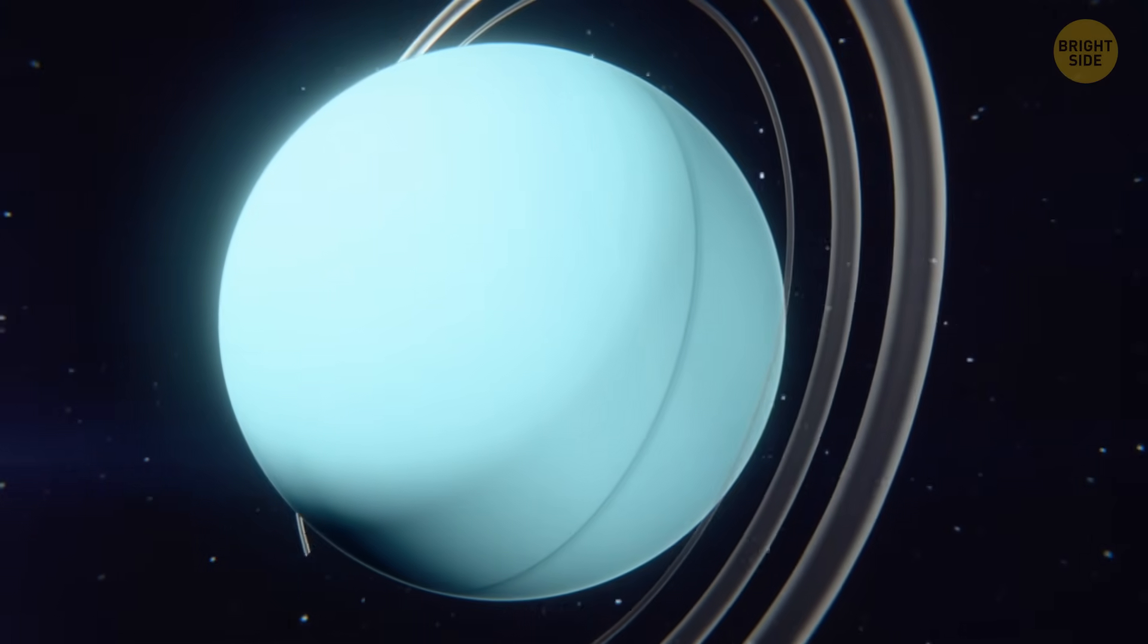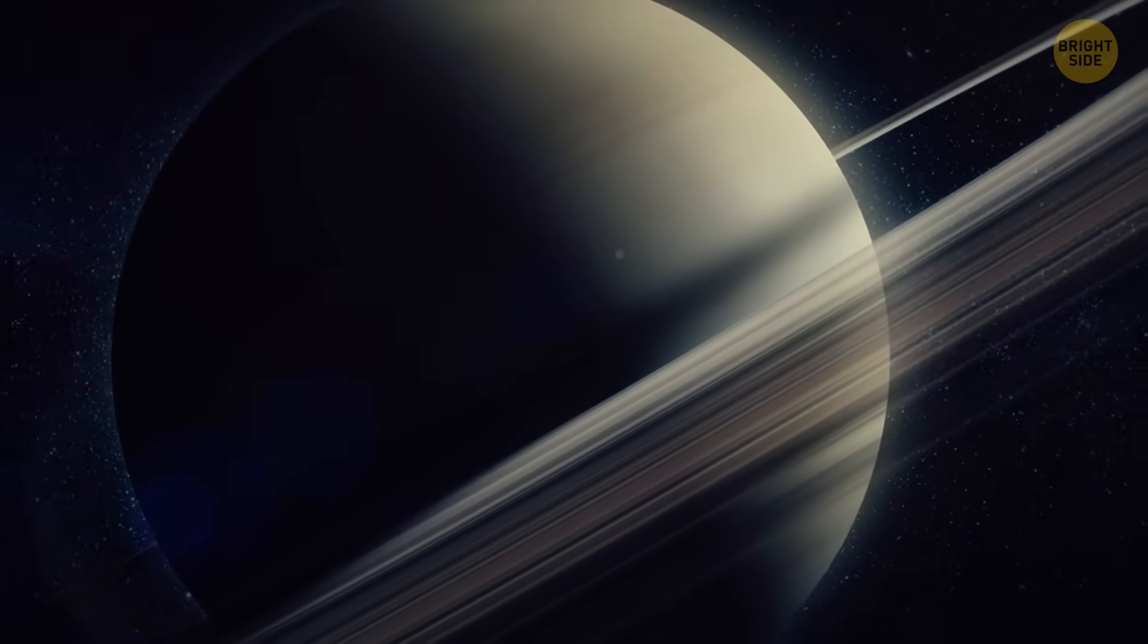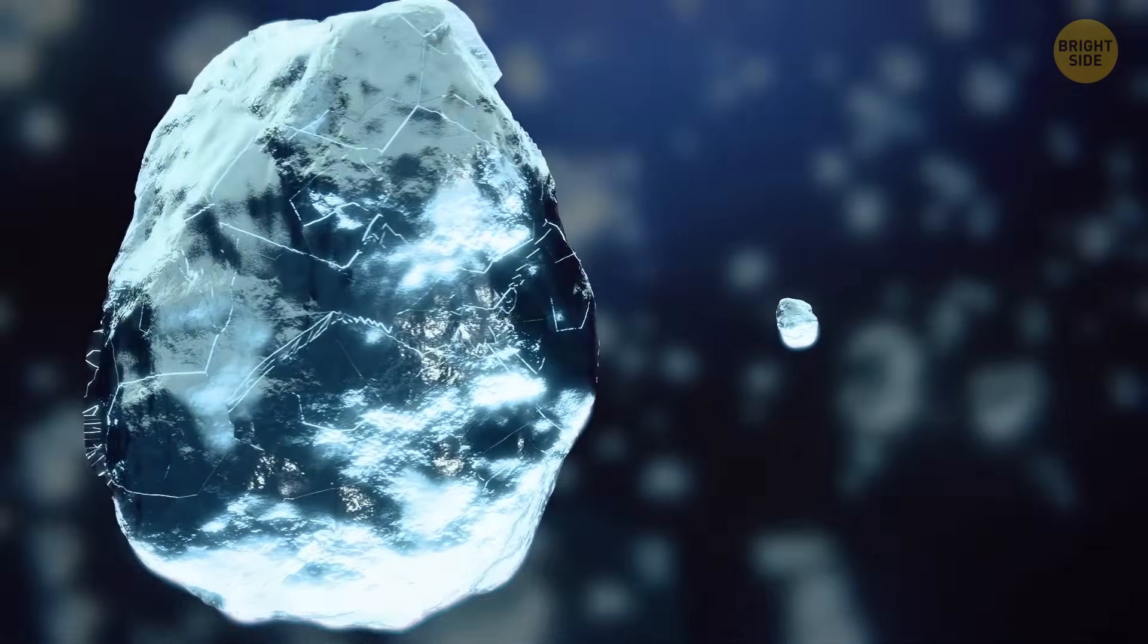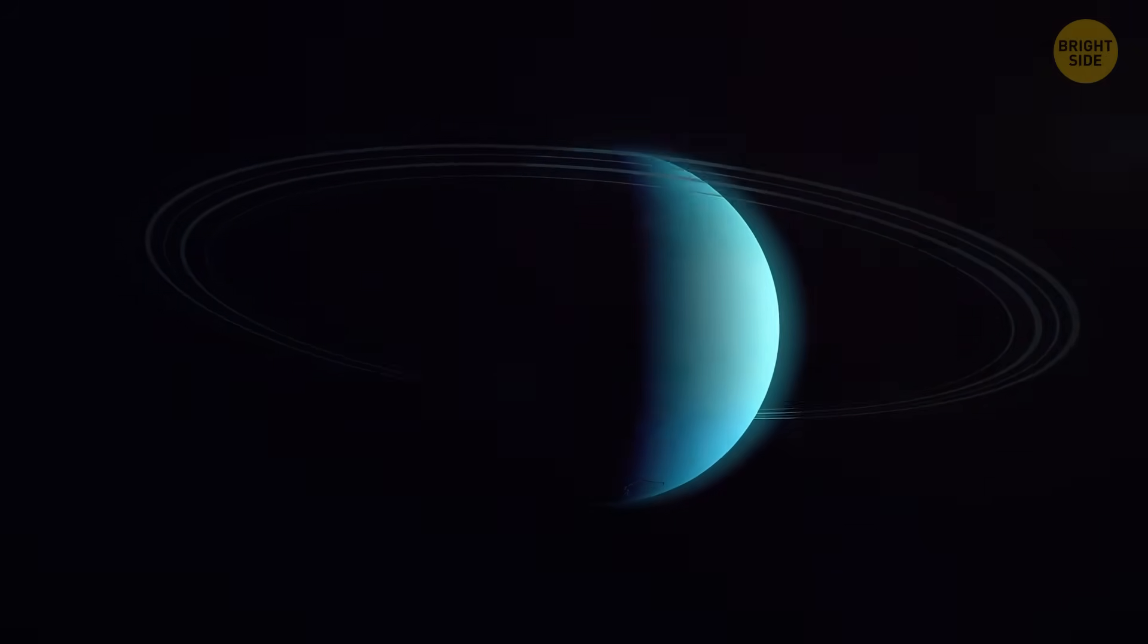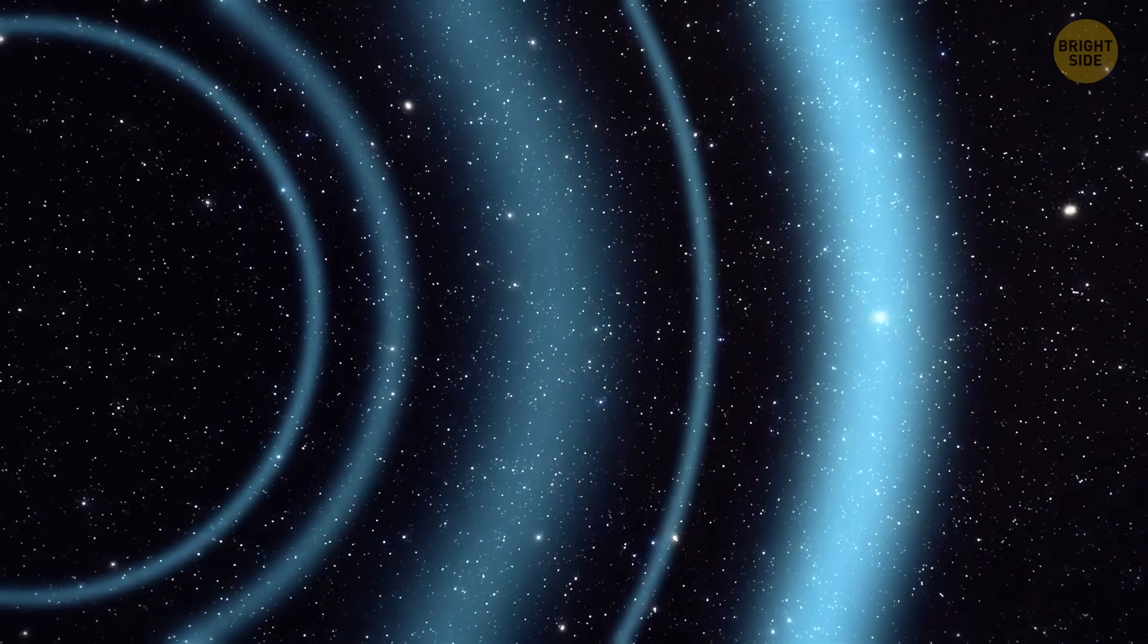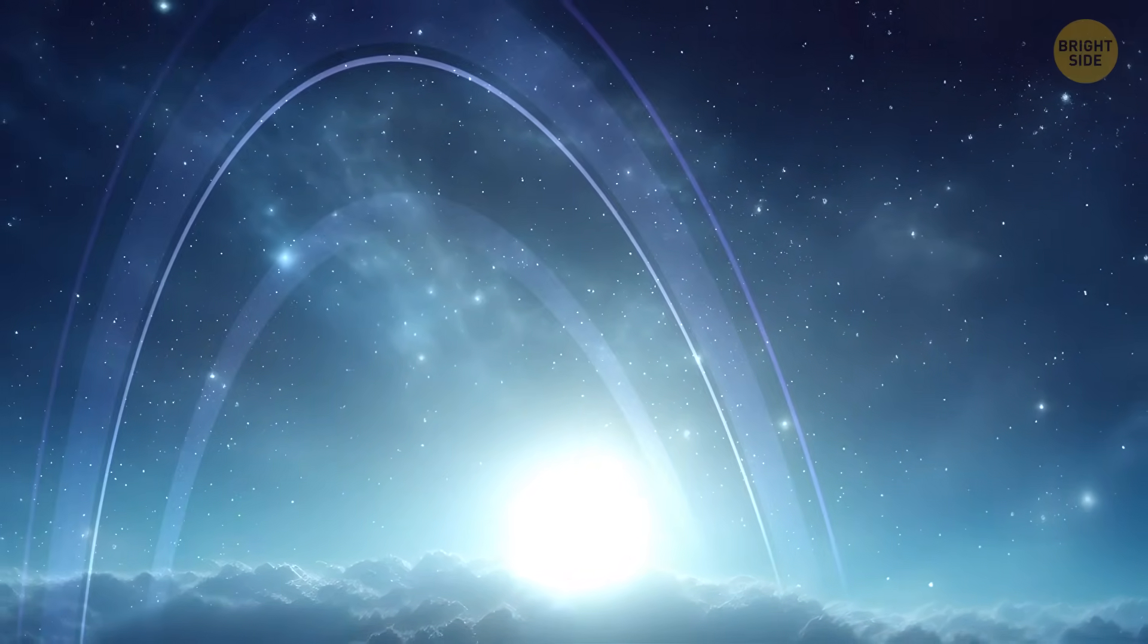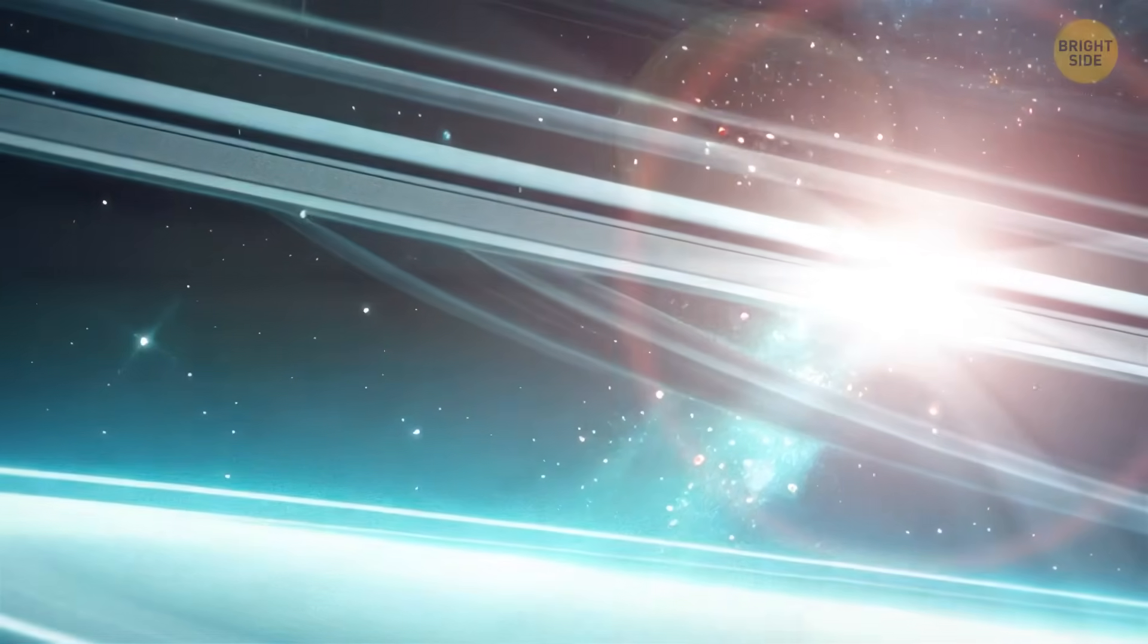And they aren't the only ones. Did you know that Uranus also has rings? Yeah, not only Saturn is so special. The rings are made up of ice particles, some as small as grains of sand and others as large as several feet across. They're thin, narrow, and dark compared to Saturn, for example. They're actually so black that they almost don't reflect the light. That's why it's so difficult to see them from Earth. But if you were near the surface of Uranus, you might be able to see them in the sky.